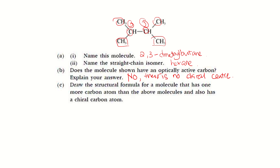Part C: draw the structural formula of a molecule that has one more carbon atom than the above molecule, and also has a chiral carbon atom. They want one more carbon — initially we have 6, so additional one gives us 7. You need to draw a molecule with 7 carbons including a chiral carbon atom. A chiral carbon atom means a carbon attached to 4 different groups, so I'm going to draw the chiral center first.